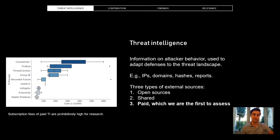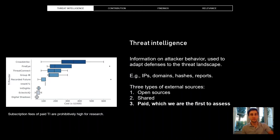Threat intelligence — there are lots of definitions, and this is our working definition. Threat intelligence includes an IP address of a C2 server, a hash of known malware, and it could also come in the form of a report, a PDF written in natural language that describes the tactics of a certain threat group — for example, how they carry out phishing operations.